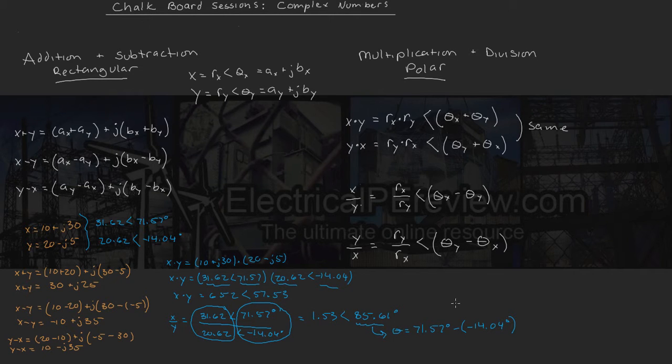Okay, let's do one more example. We're going to find y divided by x. And again, I'm throwing in that negative theta to make sure we really understand how the positives and negatives are propagated. y divided by x, we've got 20.62 at an angle of negative 14.04 divided by x, which is 31.62 magnitude at an angle of 71.57 degrees.